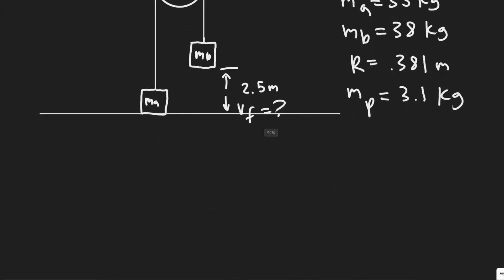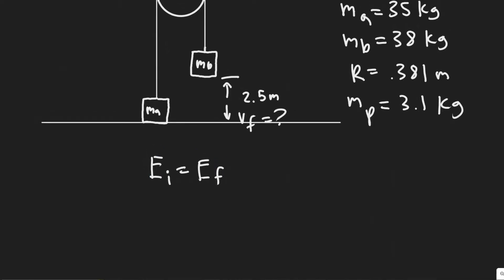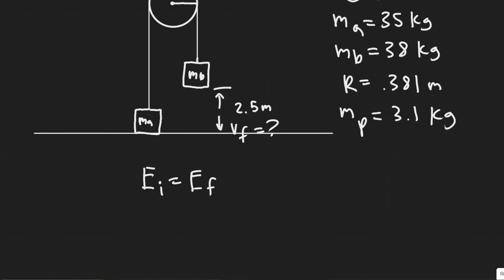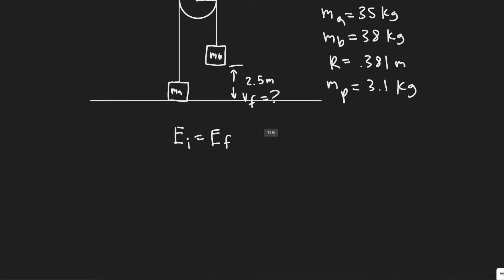We're going to use the law of conservation of energy, which tells us energy can neither be created nor destroyed. This means the energy at the beginning of the system must equal the energy at the end. We pick two points in time and set their total energies equal.